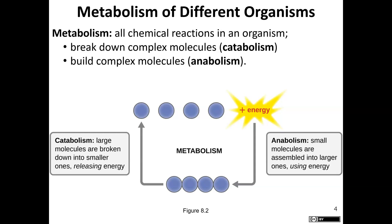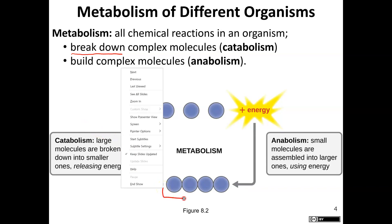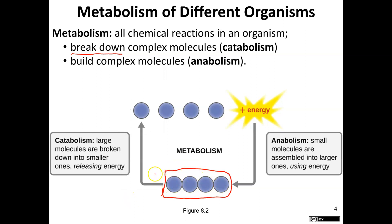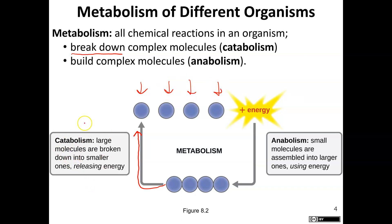Metabolism is defined as all the chemical reactions that occur within an organism or cell, and they can be broken into two major categories. The first is catabolism — the breakdown. We're breaking molecules down, and when we do that, we release energy. You start with a larger molecule with subunits linked together, break them down into individual monomers, and that's a catabolic reaction. The energy released in this process is ATP.